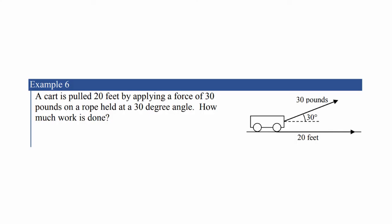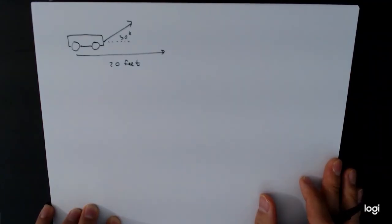Example. A cart is pulled 20 feet by applying a force of 30 pounds on a rope held at a 30 degree angle. How much work is done?